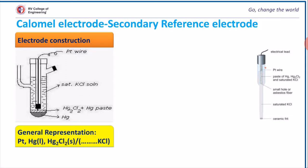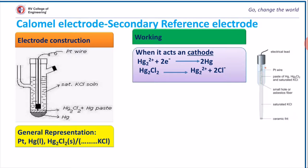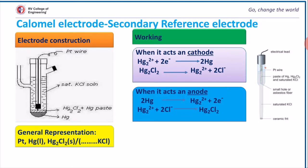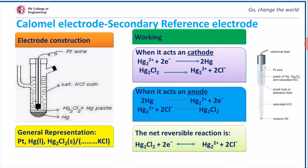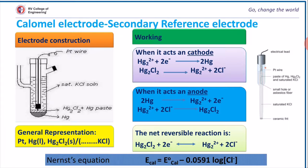The general representation of the calomel electrode is as follows. This calomel electrode acts as either cathode or anode depending on the other electrode. When it acts as anode, mercury undergoes oxidation to give a dimer — the mercurous ion — which combines with chloride ions to give mercurous chloride. The reverse reaction occurs when it acts as cathode. The net reversible reaction is: mercurous chloride combined with two electrons gives mercurous ion plus chloride ions. When the Nernst equation is applied to this net reversible reaction at 298 K, the equation becomes: E(calomel) = E°(calomel) − 0.0591 × log[Cl⁻].